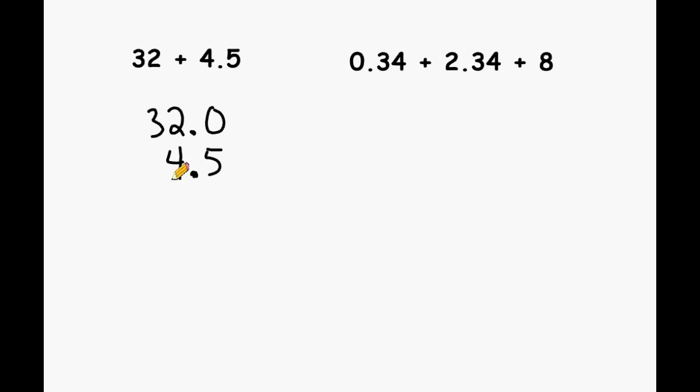After you line up your decimals properly, we add those values together and you may start by taking that decimal and dropping it straight down. Adding up all the digits in the tenths column we get 5 tenths. Adding up all the digits in the ones place we get 6. And we only have 3 here and that's 3. So our answer is 36 and 5 tenths.